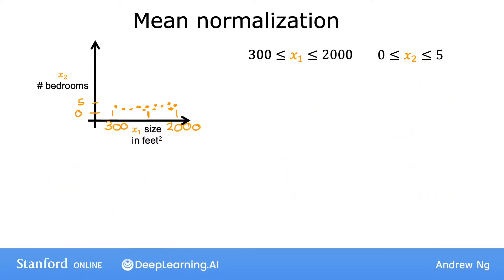In addition to dividing by the maximum, you can also do what's called mean normalization. So what this looks like is you start with the original features and then you rescale them so that both of them are centered around 0. So whereas before they only had values greater than 0, now they have both negative and positive values that may be usually between negative 1 and plus 1.